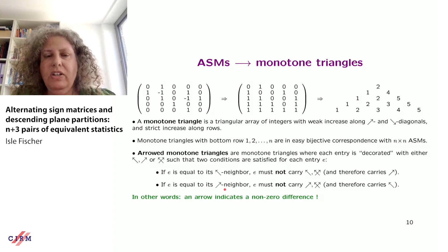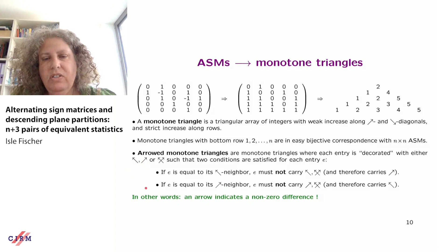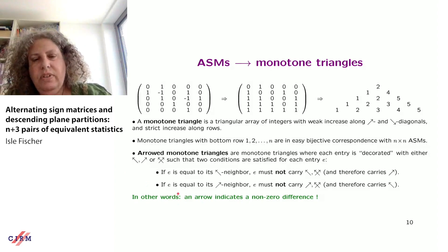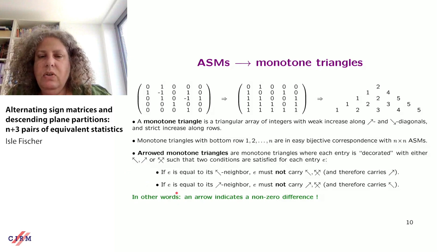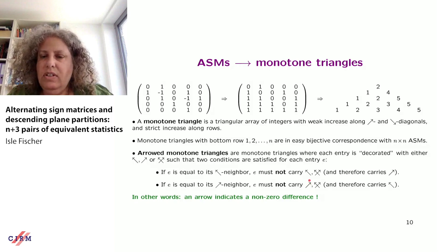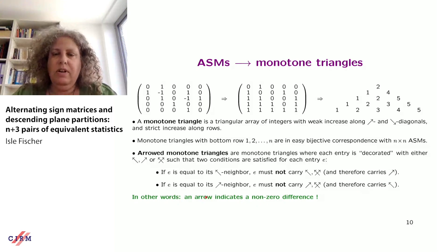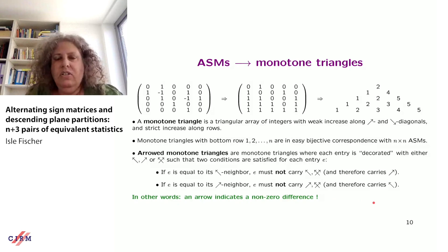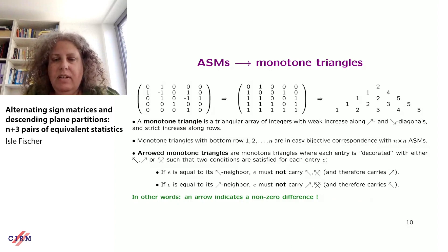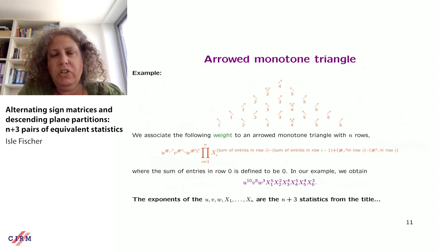Essentially, an arrow indicates there must be a non-zero difference in that direction. For example, in the fourth row, if the second entry equals its northeast neighbor (both are three), it can only carry a northwest arrow. I define a weight on this arrowed monotone triangle: the exponent of u is the number of northeast arrows, of v is the number of northwest arrows, of w is the number of double arrows, and the exponent of x_i is the sum of entries in row i minus the sum in row i−1, adjusted by the arrows in row i.